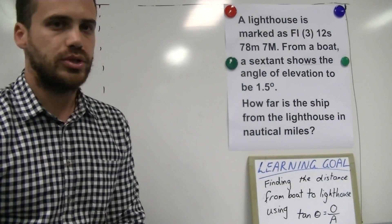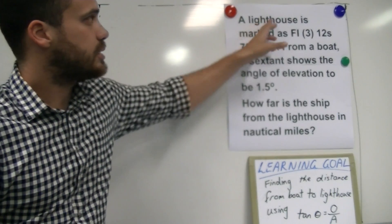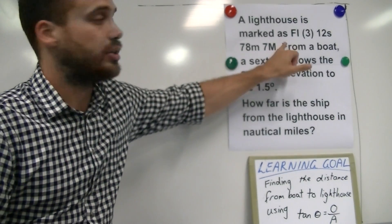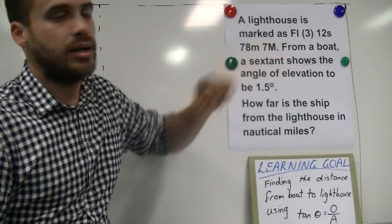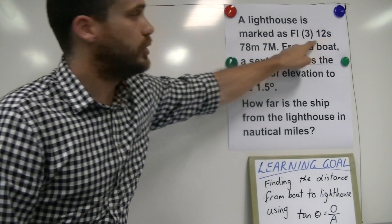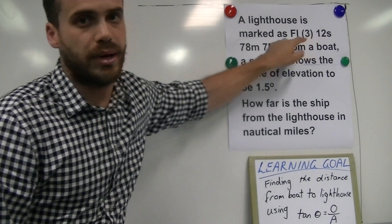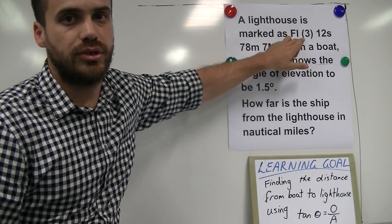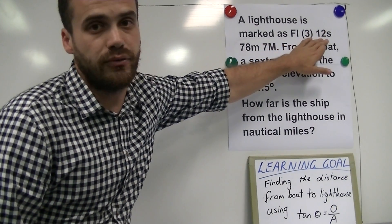Let's take a look at the question first. A lighthouse is marked as follows and you can see this code here. Now remember that this part of the code refers to the flashing pattern. It flashes three times every 12 seconds.